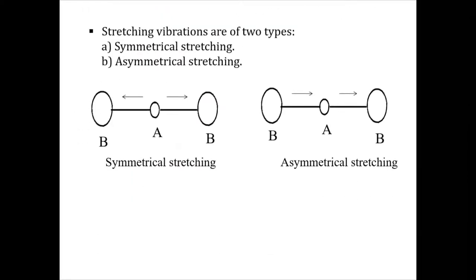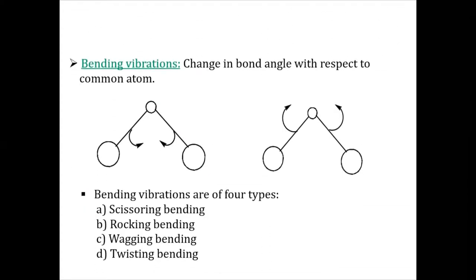Stretching vibrations are mainly of two types: first, symmetrical stretching, and second, asymmetrical stretching. Suppose you have a center atom with two atoms on either side, and the stretching is happening the same way on both the left side and right side — that is called symmetrical stretching. If the stretching is not symmetrical, it will be called asymmetrical stretching.